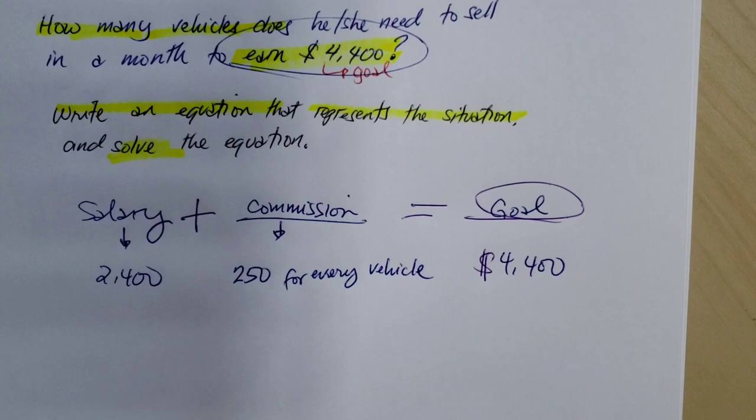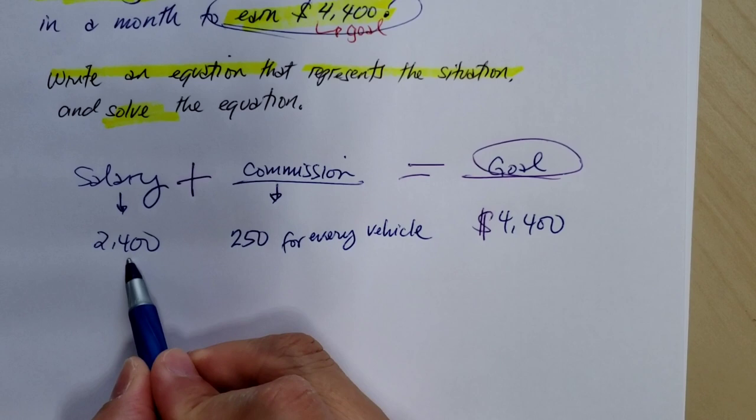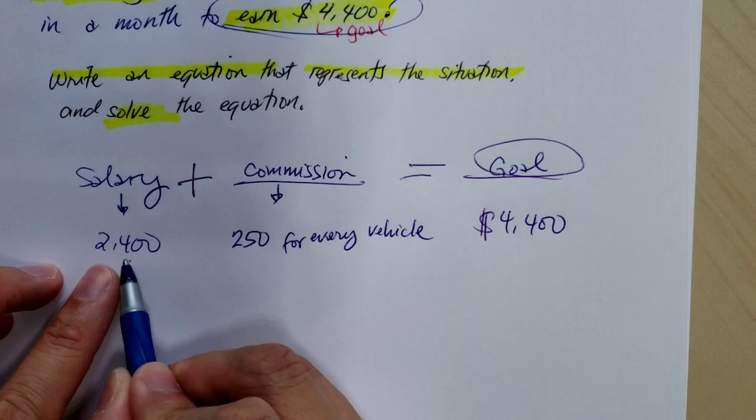Now let's identify our variable. We know this is a constant. Constant means it doesn't have any variable with it. He or she will get the salary every month.